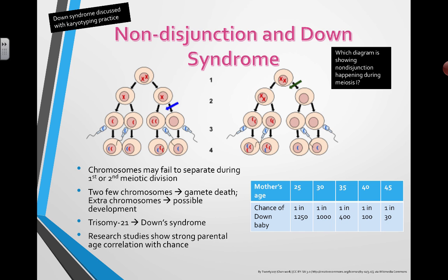What's interesting about this is it's an example of how presenting statistics in different ways can either show the real story or really mislead people. For a mother who's 25 years old, the chance of a Down syndrome baby is 1 in 1,250 births, and by the time a woman reaches 40 we're talking about 1 in 100 births. Between 30 and 35 the chance roughly doubles — around 1 in 1,000 versus 1 in 500 — but by age 45 the chance increases significantly.